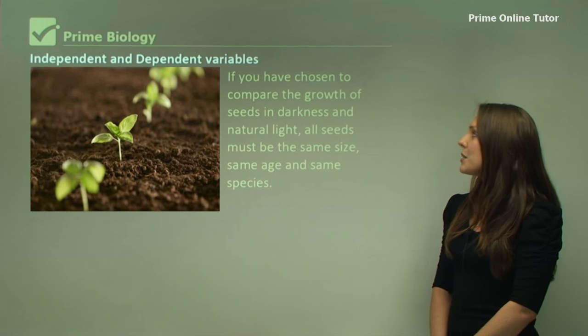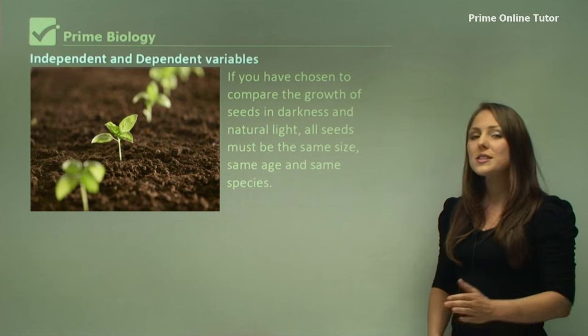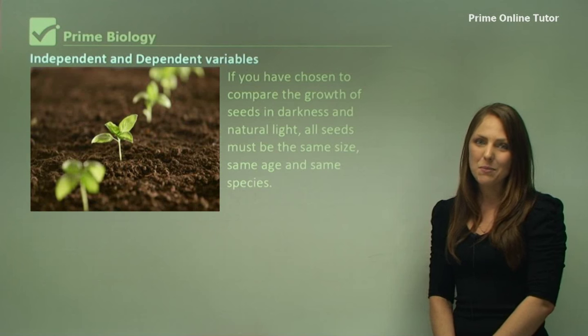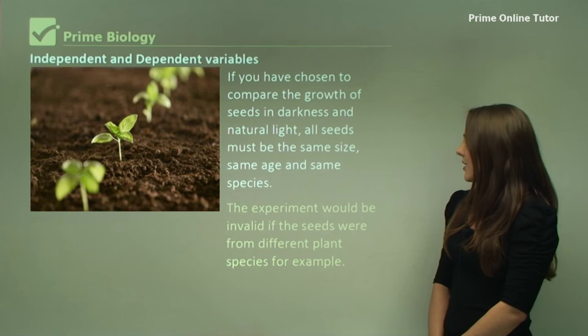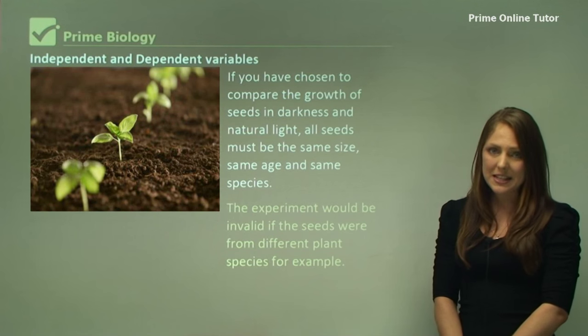So if you have chosen to compare the growth of seeds in darkness and in natural light, all seeds or seedlings must be the same size, same age, and same species to be consistent in the experiment. It would be invalid if the seeds were from different species for example.